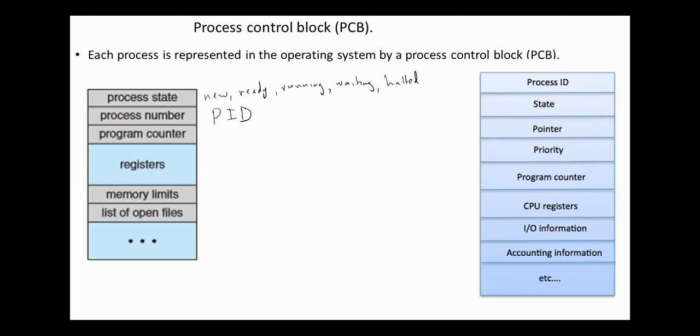Process number or process ID, and usually this is an integer value assigned to each process. Program counter which holds the address of the next instruction to be executed. CPU registers such as accumulator, index registers, stack pointer, condition codes, and others. Memory management information such as the values of the base and limit registers, page or segment tables, and others.